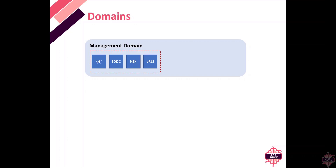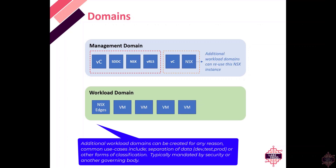The initial management domain consists of four hosts. In the standard architecture the first three appliances spun up are vCenter, SDDC Manager, and the NSX Managers. The vRealize Suite is a day-two operation — you log into SDDC Manager and deploy it after the fact. When you spin up a workload domain, SDDC Manager orchestrates the deployment of another vCenter and NSX Managers, which are placed in the hosts constructed for the management domain.